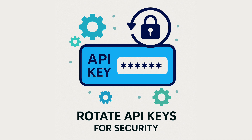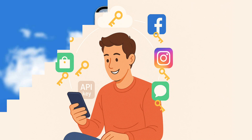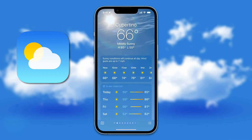Now, where do we see API keys in action? You've probably used them without even realizing it. For example, weather apps often use APIs to fetch real-time forecasts, and they require an API key to do so.